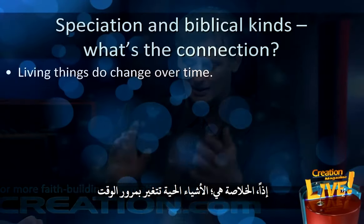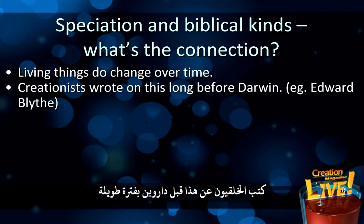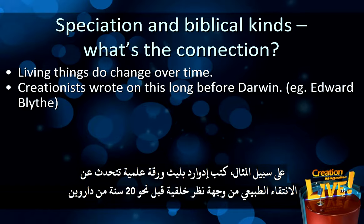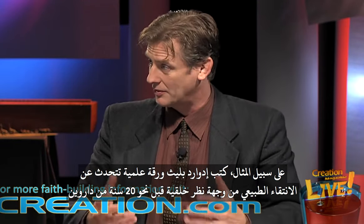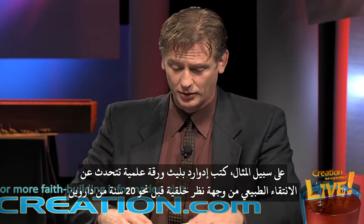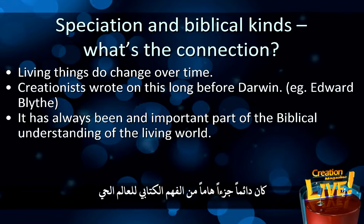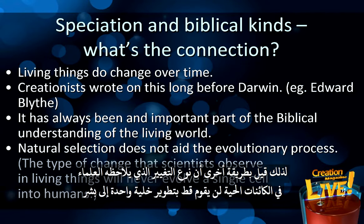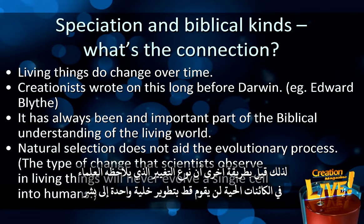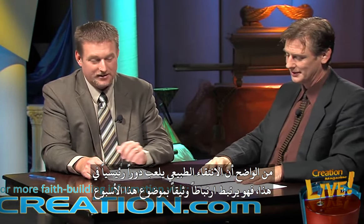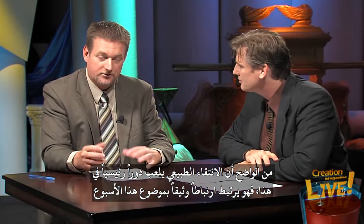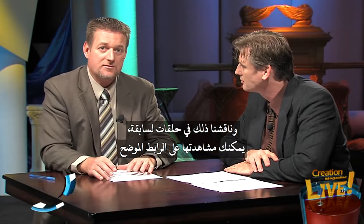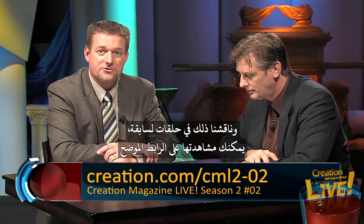Living things do change over time, and creationists wrote on this long before Darwin. For example, Edward Blyth wrote a scientific paper on natural selection from a creationist viewpoint some 20 years before Darwin. It's always been an important part of the biblical understanding of the living world, and natural selection does not aid the evolutionary process. The type of change that scientists observe in living things will never evolve a single cell into humans — it's just the wrong direction of change. Natural selection ties in very closely with this week's topic. Go to creation.com/CML2-02 to catch up on natural selection.